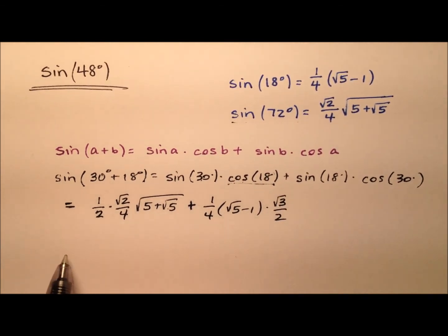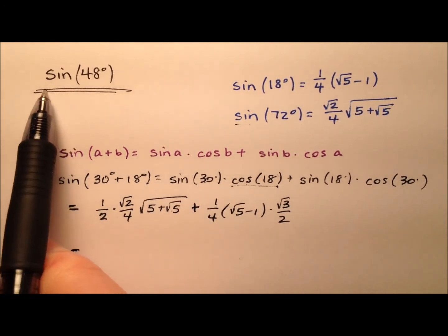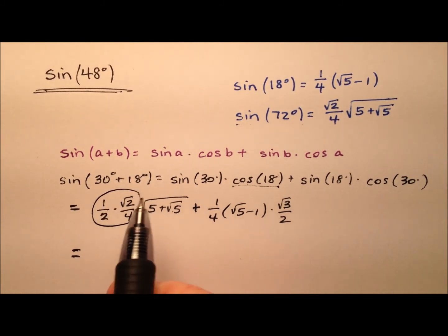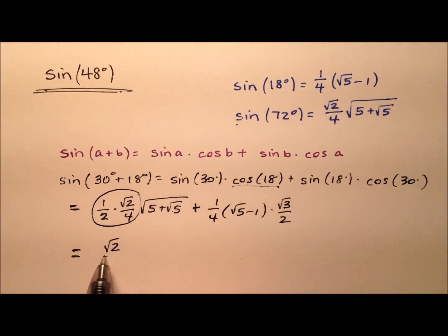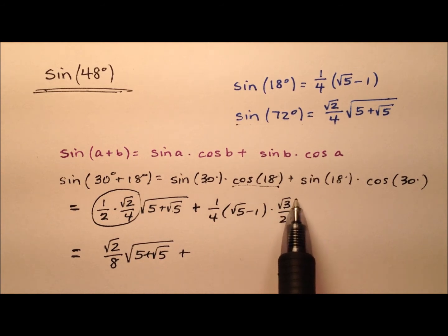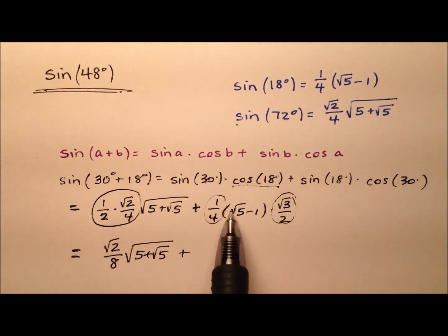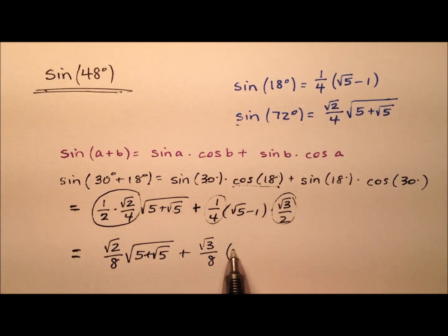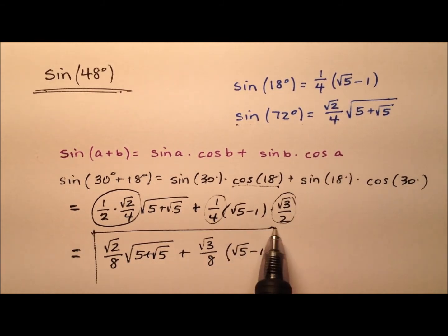So we can do some quick simplification here to get the exact value for the sine of 48 degrees. We have the square root of 2 over 8, multiplied by that radical expression. And to that, we add the square root of 3 over 8, multiplied by the expression (√5 − 1).